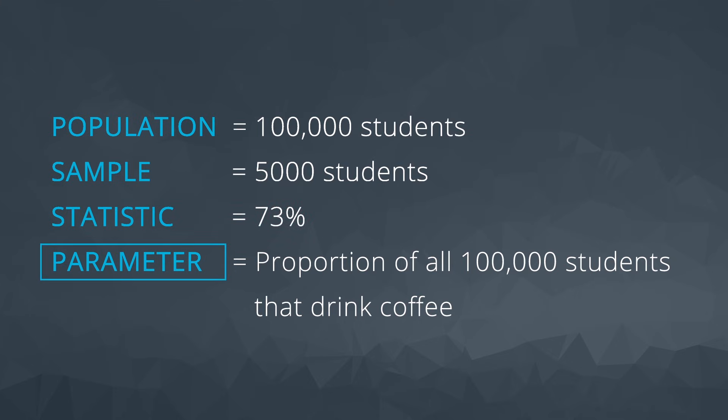This 73% is the statistic. A numeric summary of the population is known as a parameter. In our case, we don't know this value, as it's a number that requires information from all Udacity students. Drawing conclusions regarding a parameter based on our statistics is known as inference.